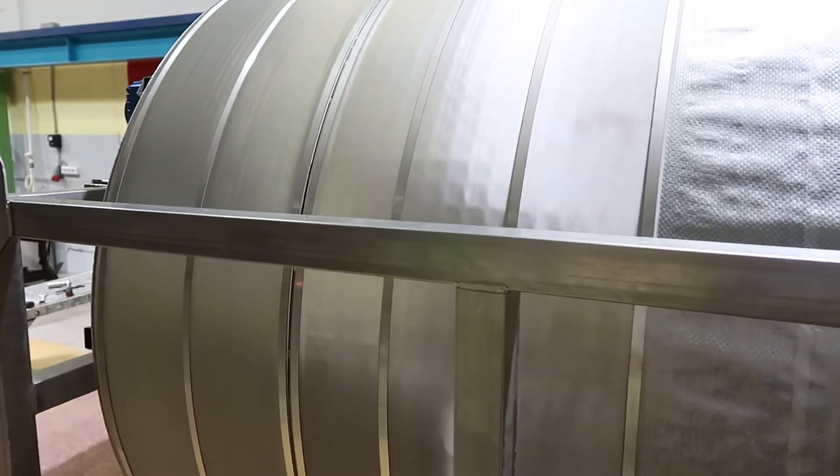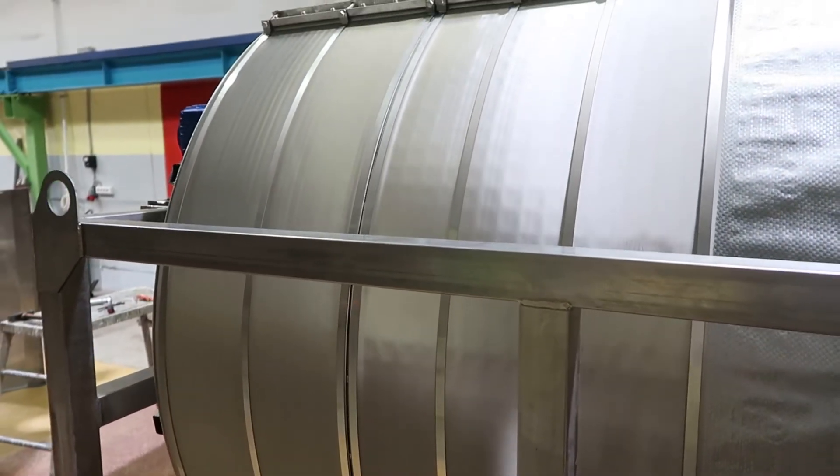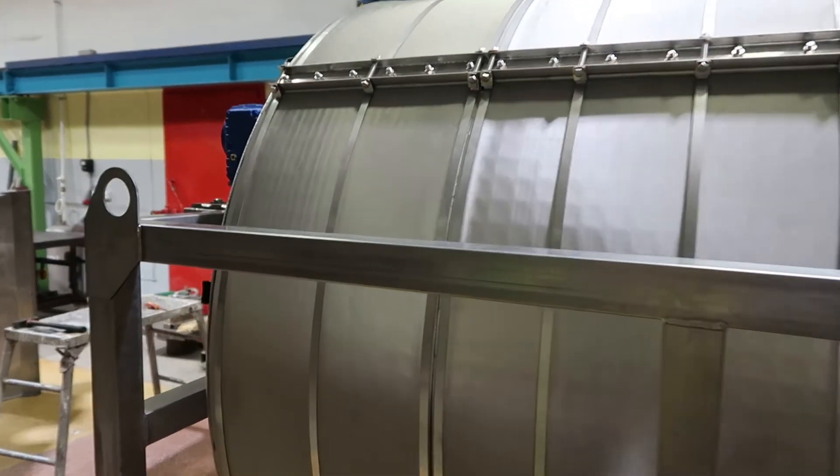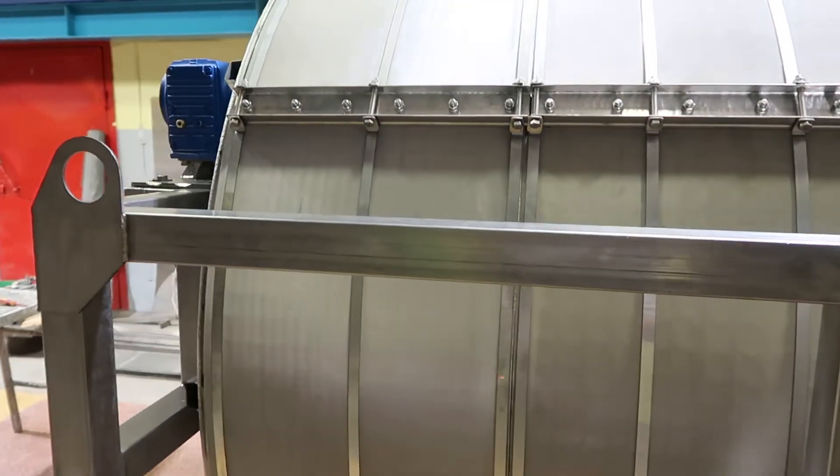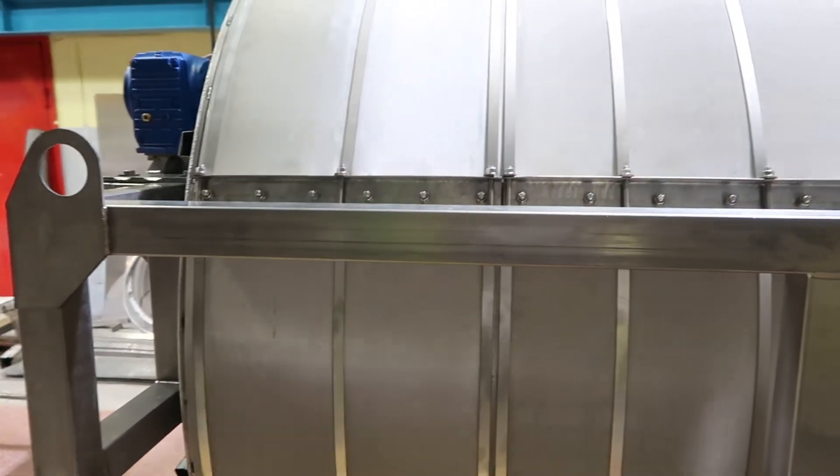Here we can see the filtering surface of the drum. This filter has a 60 micron mesh installed. You can see the level of the mesh tension and fastening.